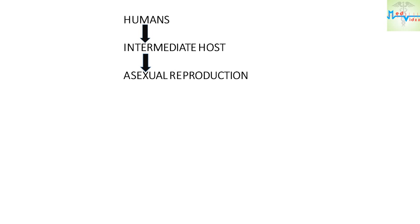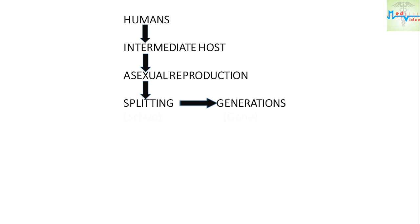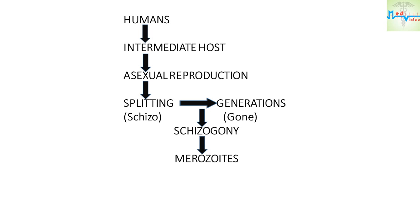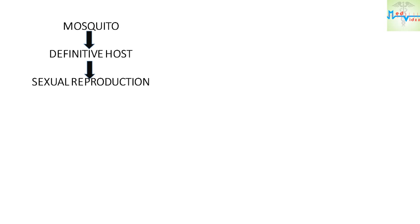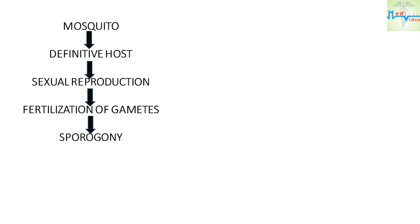Humans are the intermediate host and so asexual reproduction takes place in them. Asexual reproduction means multiplication by splitting to form generations — a process called schizogony, which results in the formation of merozoites. These merozoites then develop into male and female gametocytes within the human body. In the mosquito, sexual reproduction takes place, known as sporogony, which produces sporozoites.